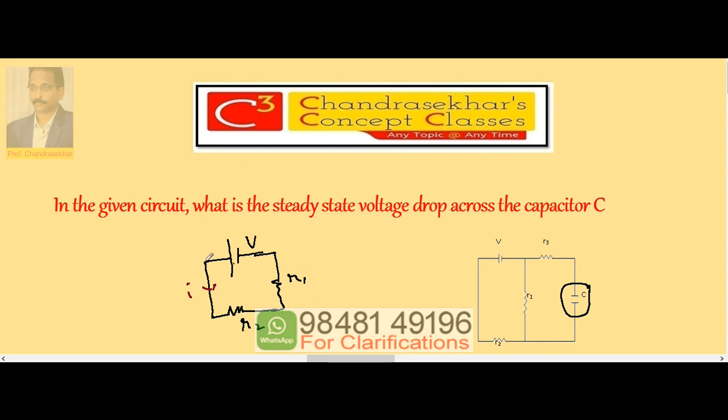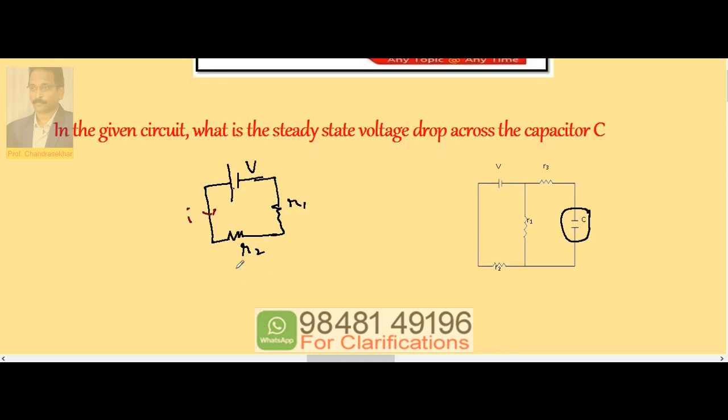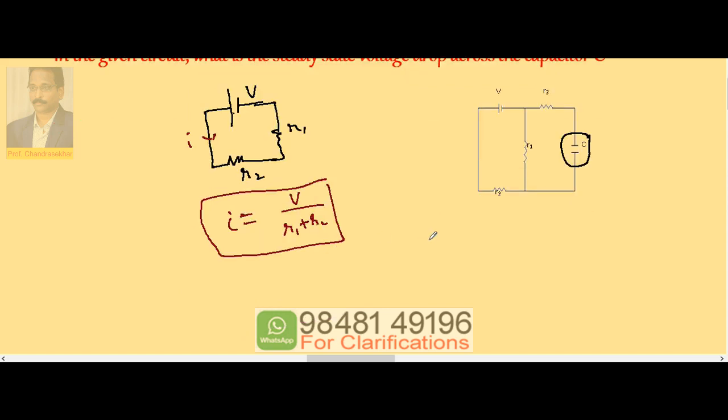the current I. So I becomes equal to V divided by R1 plus R2. Now this is the current. We want to calculate the potential difference for steady